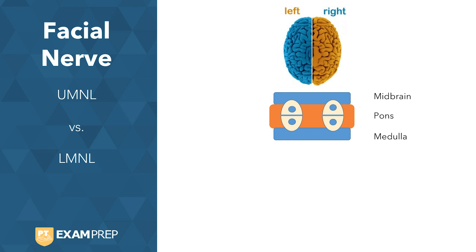Remember, cranial nerves are part of the peripheral nervous system. The nerve is then divided into two regions to innervate either the upper or lower part of the face.